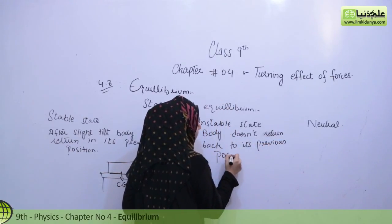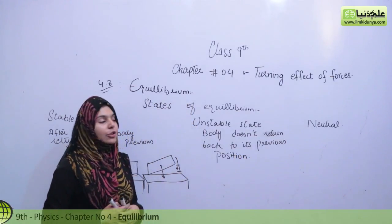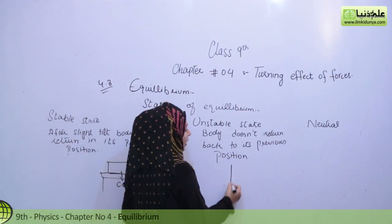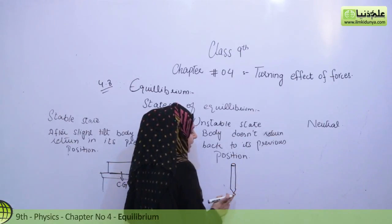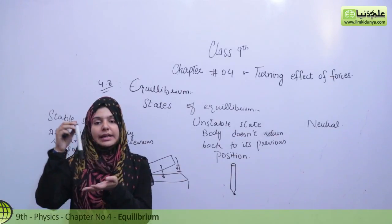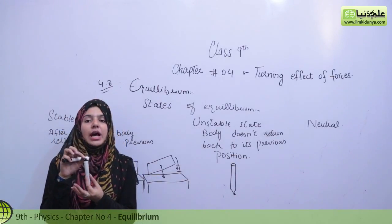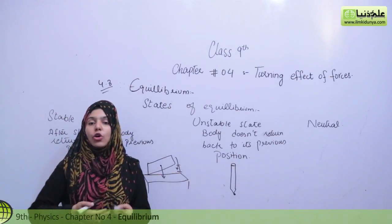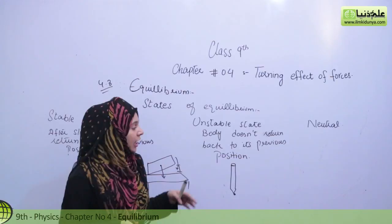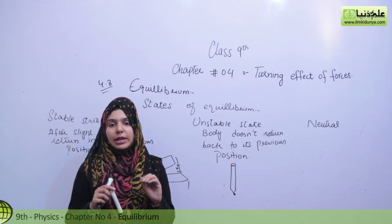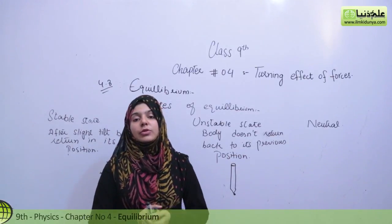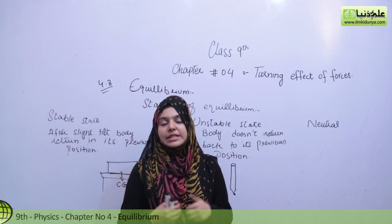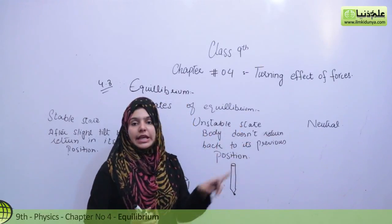For example, if we take a lead pencil or marker and strand it on its tip, it remains in equilibrium as long as we hold it. But as soon as we leave it, it falls to another position. Those bodies that are in equilibrium for a moment but, when a force is applied or a slight move is made, cannot return to their previous position — these are called the unstable state of equilibrium.